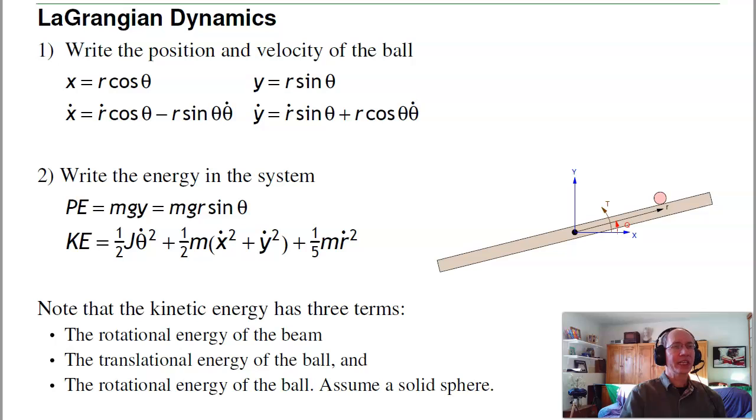To get the dynamics, I need to write the Lagrangian. To do that, I need the kinetic energy and potential energy. For the ball, its position is r cos θ and r sin θ. The derivative is x dot using chain rule: r dot cos θ minus r sin θ theta dot. Y dot is chain rule: the derivative of the first term is r dot sin θ, the derivative of the second term is r cos θ theta dot.